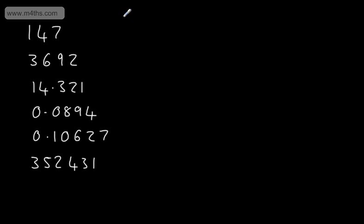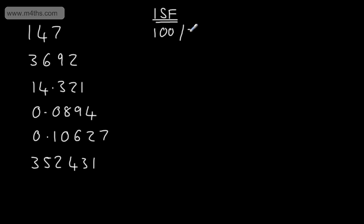So let's take some of these numbers and round them to one significant figure. Let's round 147 to one significant figure. So my choices are going to be 100 or 200 — I'm rounding to the nearest 100. If we think about this, the 4 is less than 5.